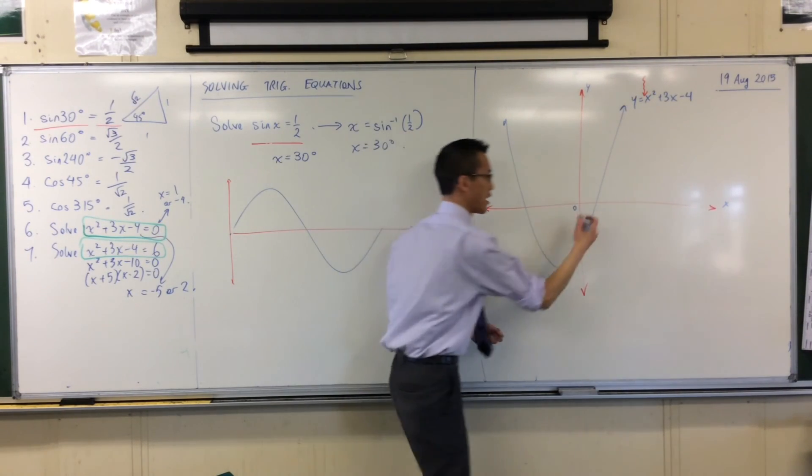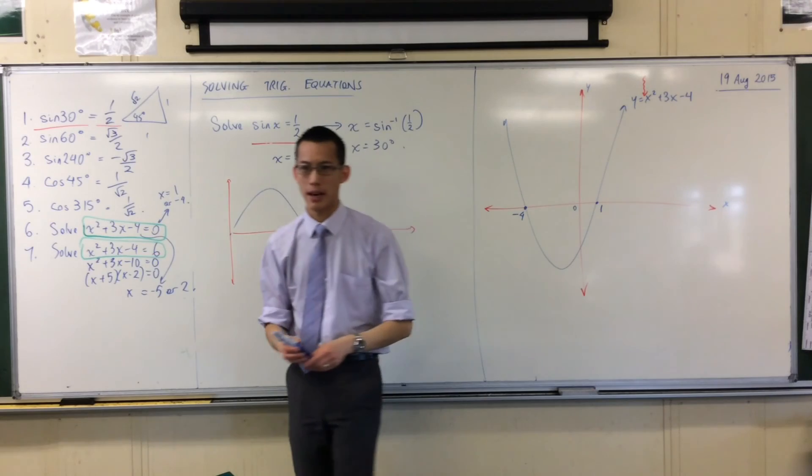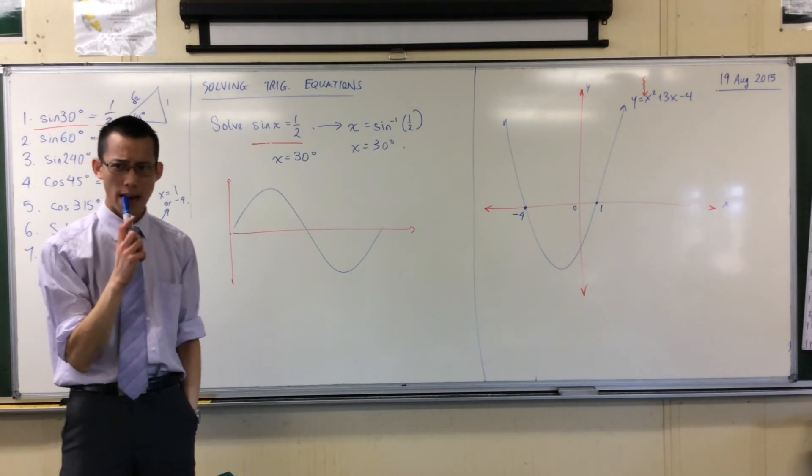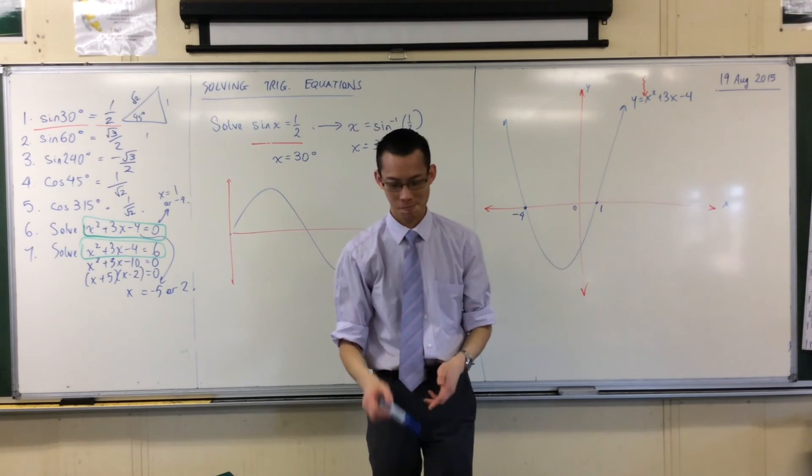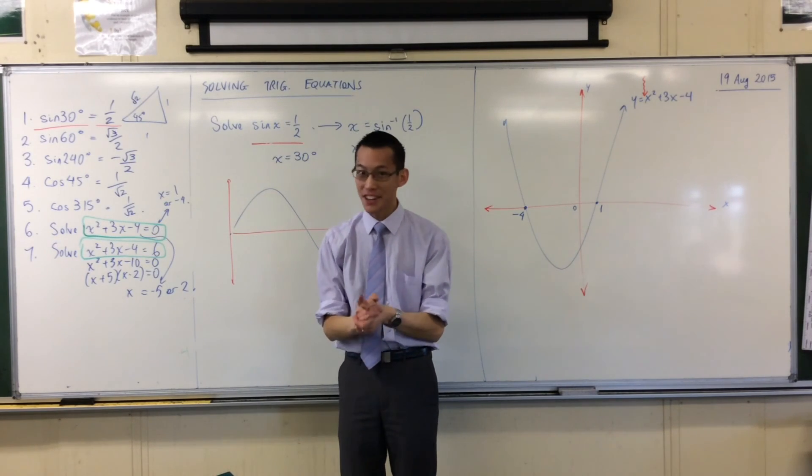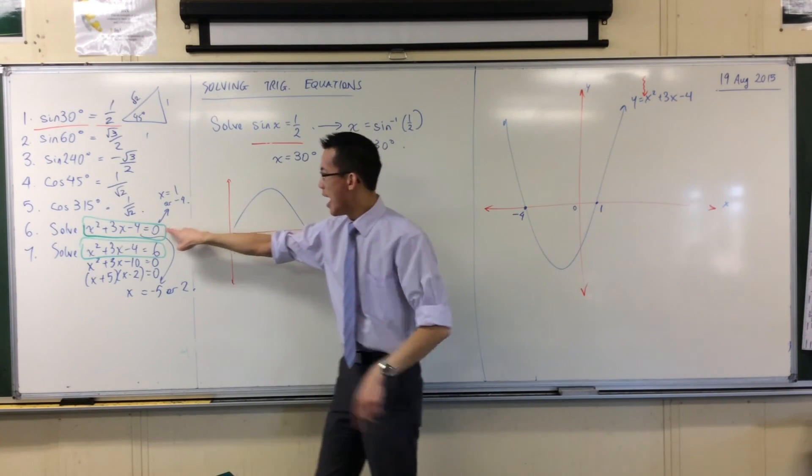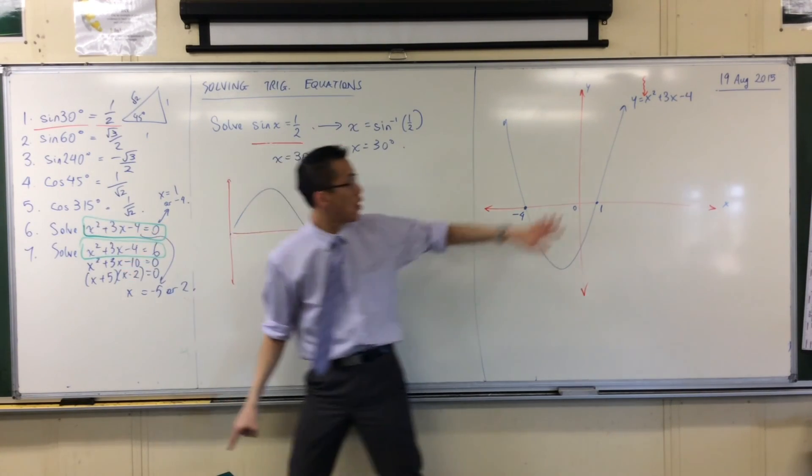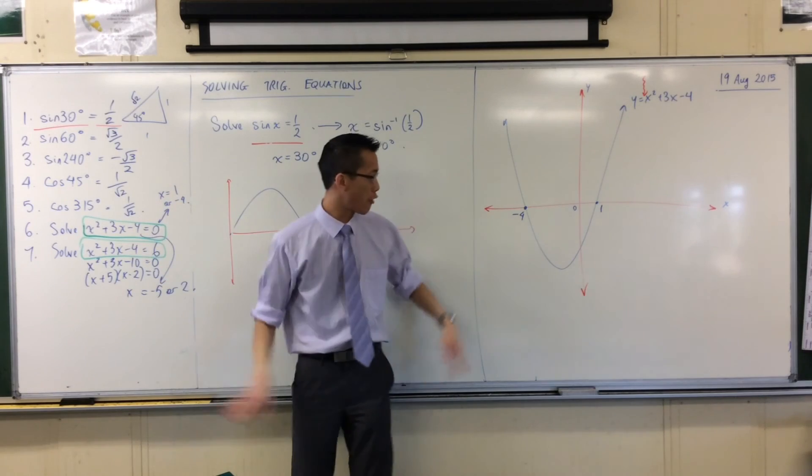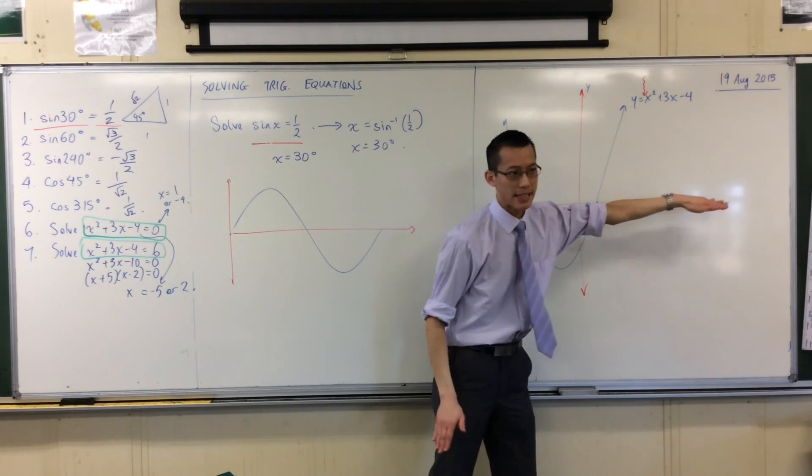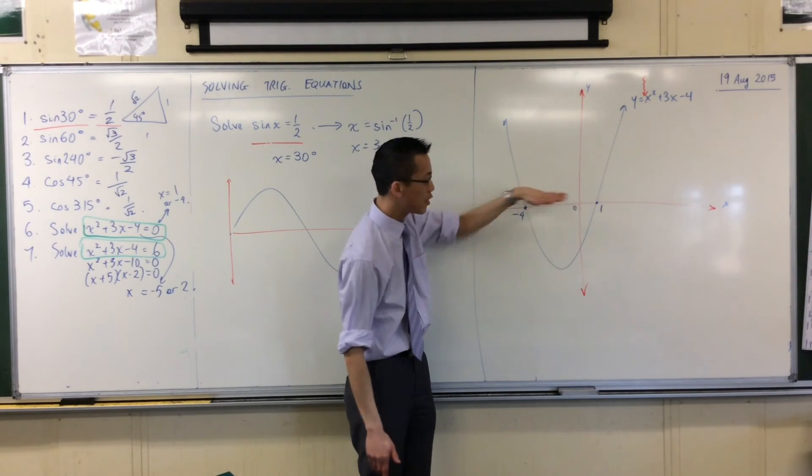Now I also know that I've got this point here, and this point here, which are 1 and negative 4. How do I know that? How do I know that those are the values where it hits the x axis? How do I know those are the intercepts? I know because you told me. There it is right there. You factorized it, and you told me x squared plus 3x minus 4, this graph, it's equal to 0 at these points. Where's 0? Here's 0. There's the x axis. So at x equals negative 4 and x equals 1, the graph is equal to 0.